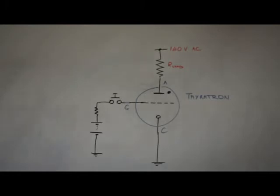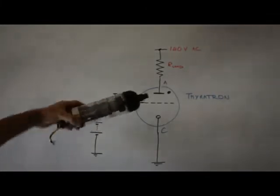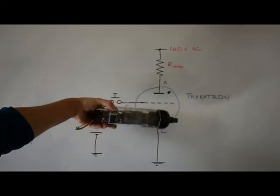So this is a thyratron. A thyratron is basically a valve-like device. They can vary in size. This one is a neon-filled cold cathode and this is a slightly larger mercury-filled hot cathode device.